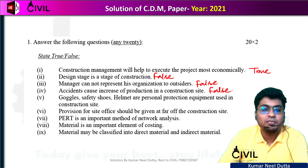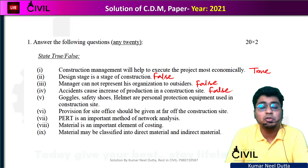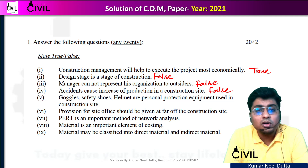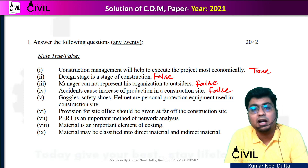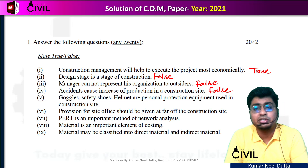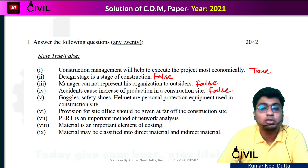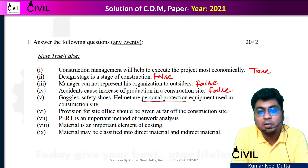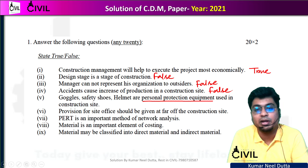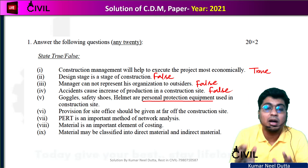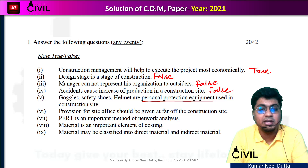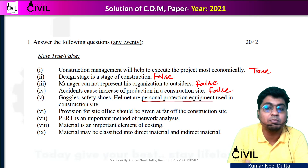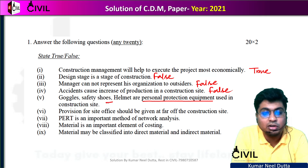Next, number 5. The question states: goggles, safety shoes, and helmet are personal protection equipment used in construction sites. This is PPE — as you know from COVID-19, the term PPE stands for Personal Protection Equipment. When we go to a construction site as a Civil Engineer, we discuss helmet, goggles, and safety shoes. So this will be true.